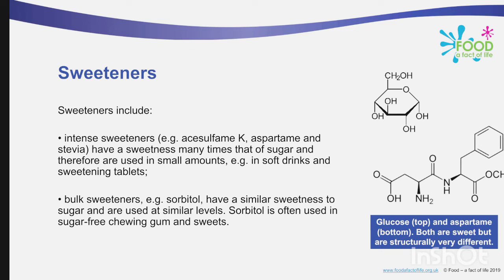Sweeteners include two categories. First, intense sweeteners — for example acesulfame K, aspartame, and stevia — which have a sweetness many times that of sugar and are therefore used in small amounts, for example in soft drinks and sweetening tablets. Second, bulk sweeteners — for example sorbitol — which have a similar sweetness to sugar and are used at similar levels; sorbitol is often used in sugar-free chewing gum and sweets.